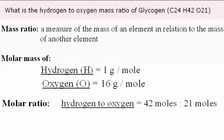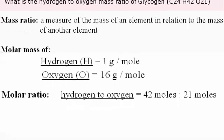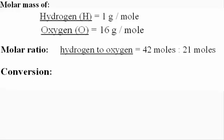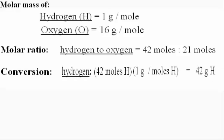So let's start off with hydrogen. The compound tells us that there are 42 moles of hydrogen within glycogen. Now to convert that to a mass, we multiply that by the molar mass of hydrogen. After multiplying that through, we get 42 grams of hydrogen. Easy enough.